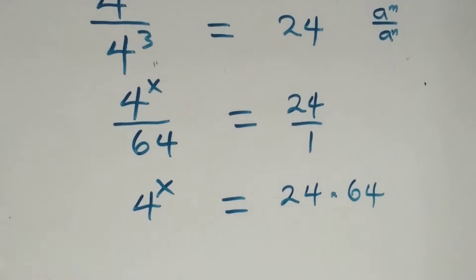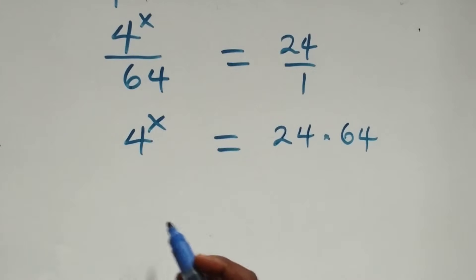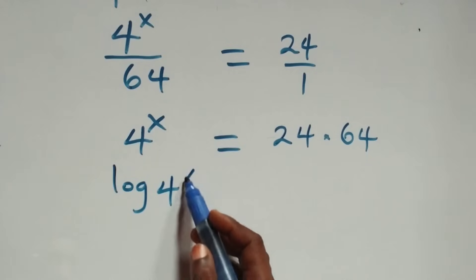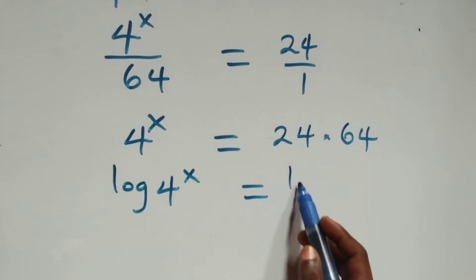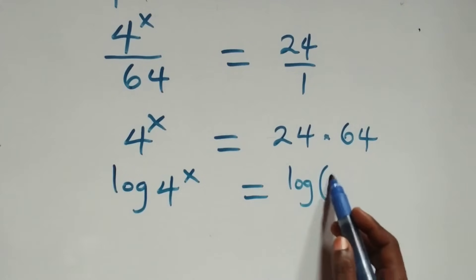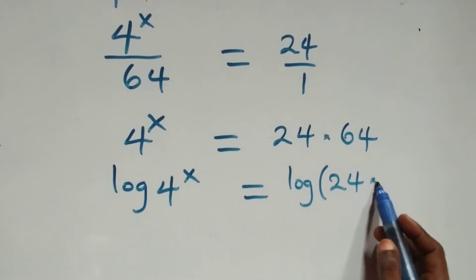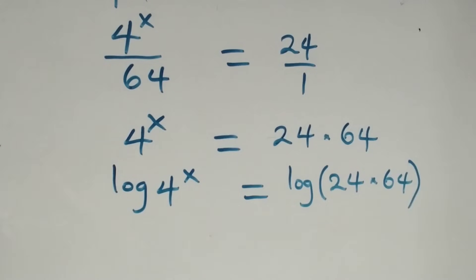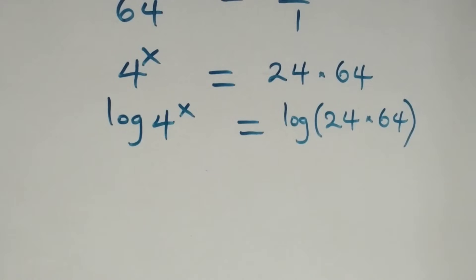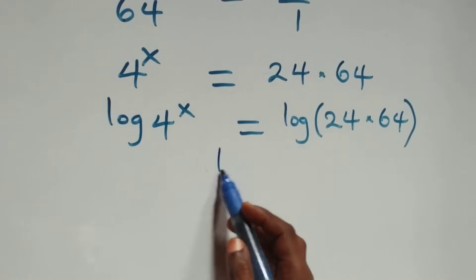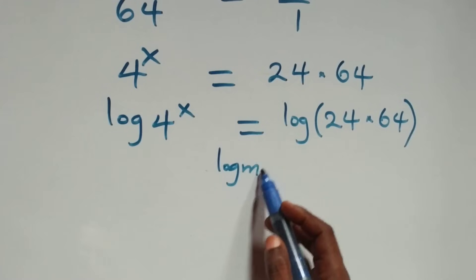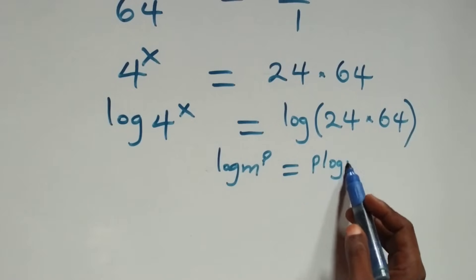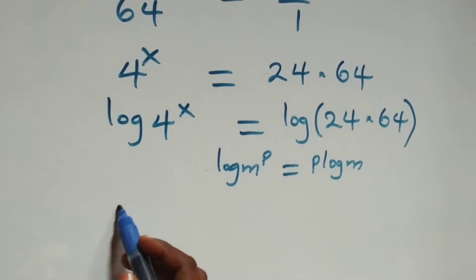From here we take the log on both sides: log of four raised to power x equals log of twenty-four times sixty-four. Then we divide both sides by log four. We apply the power rule of logarithms: log m raised to power p is the same as p log m.